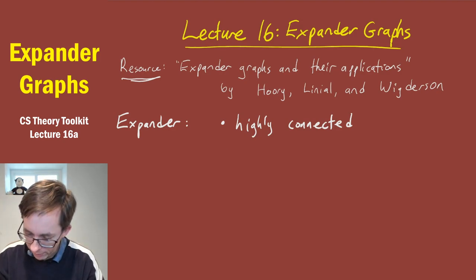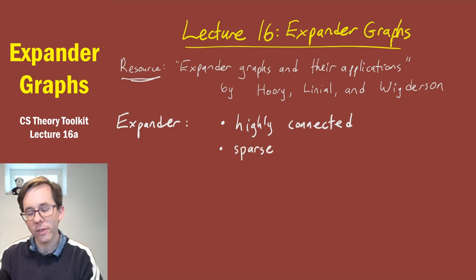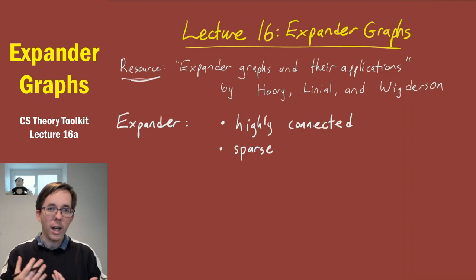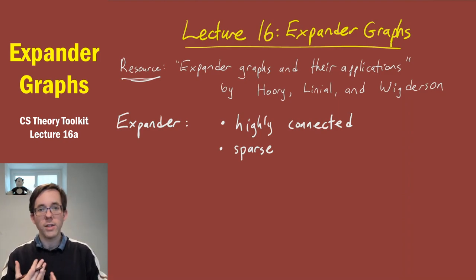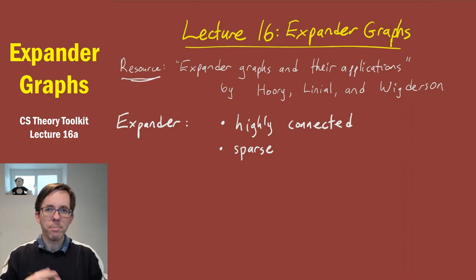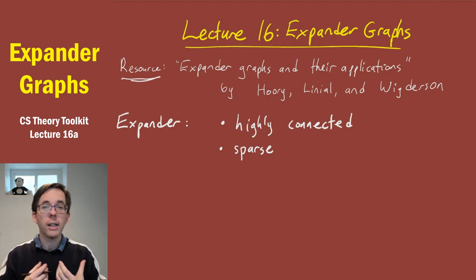The second property of an expander graph is that it's sparse, meaning not too many edges. You can get the ultimate super-connected graph if you take the complete graph, which has on the order of n² edges in an n-vertex graph. But when people talk about expander graphs, they usually insist that the graphs be sparse — most ideally, they should have only a linear number of edges, big O of n edges.